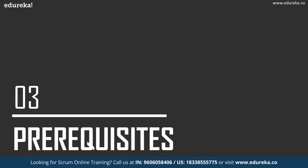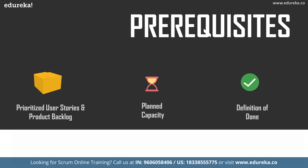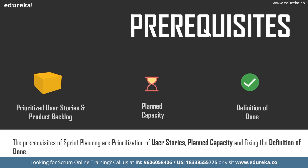There are certain prerequisites to hold effective sprint planning: prioritized user stories and product backlog, planned team capacity, and the definition of done. Your user stories and story points should be in a prioritized, well-groomed order so you know each item's priority before planning begins. For planned capacity, you assess how much each team member can work in a given time. For definition of done, every member must agree on when the product is considered ready — it is a complete checklist of criteria.